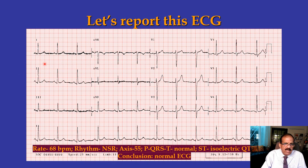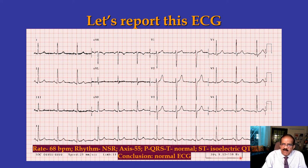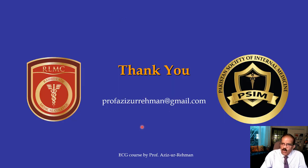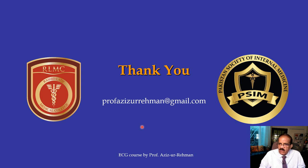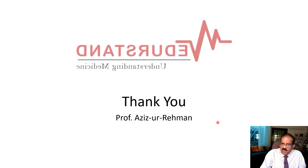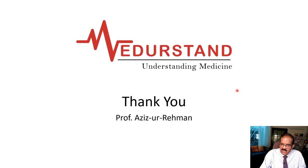Here is one example: rate is 68 beats per minute, rhythm is normal sinus rhythm — every P wave is followed by a QRS complex and there are as many P waves as QRS complexes. Axes are normal, ST segment is isoelectric, QT interval is normal. Conclusion: this ECG is normal. Thank you very much. I hope you liked this video. If you did, please follow all videos in this 24-25 part series, which will be released over approximately three months. This has been Professor Azizur Rahman from medicine — I look forward to seeing you in my next video.